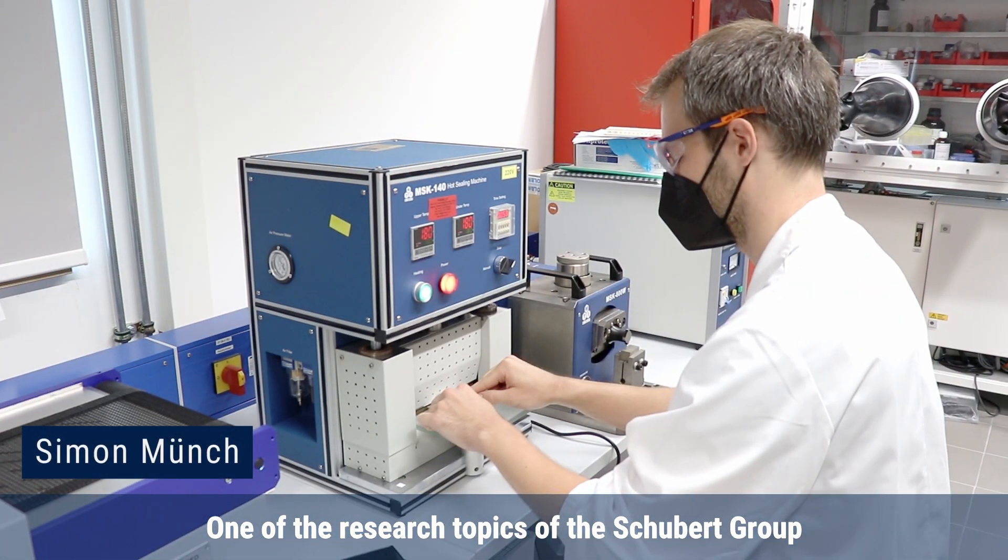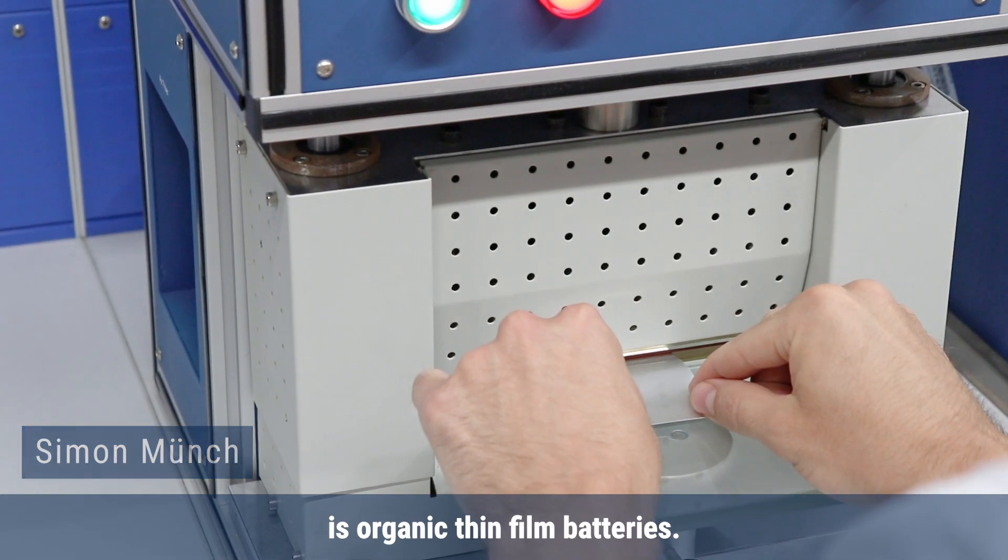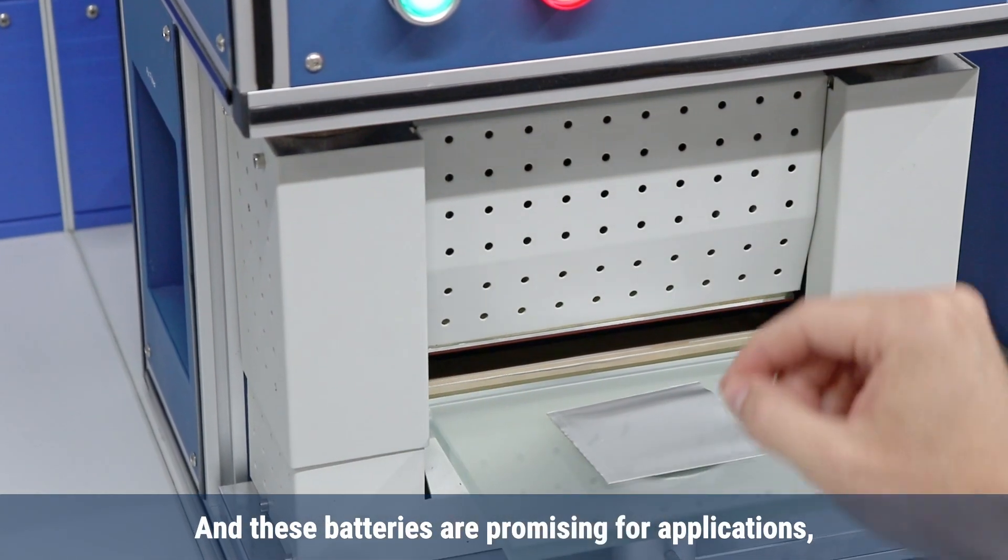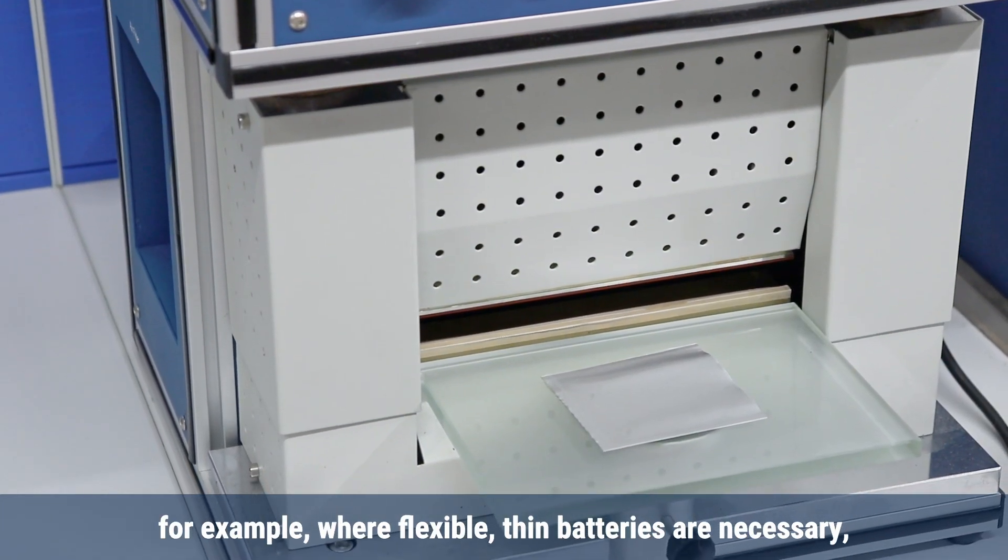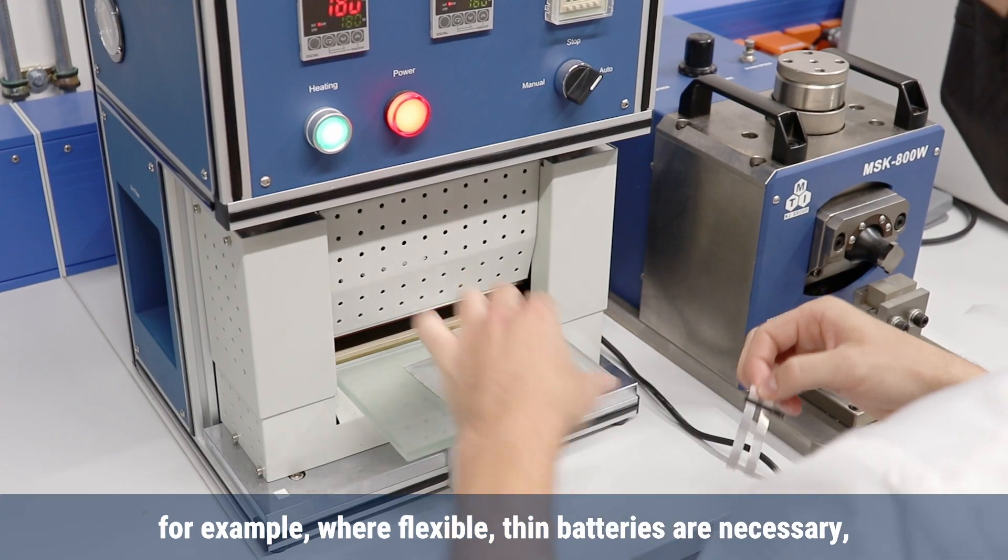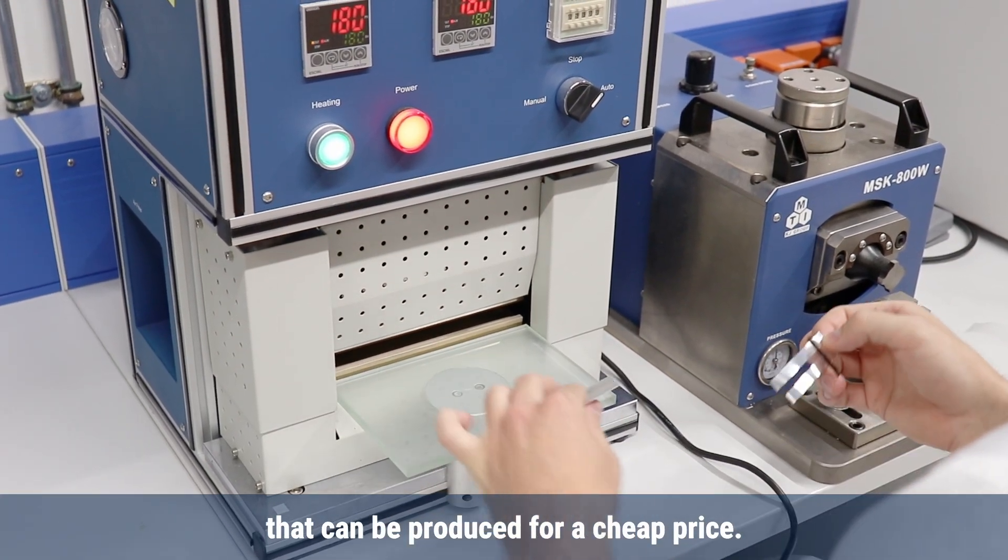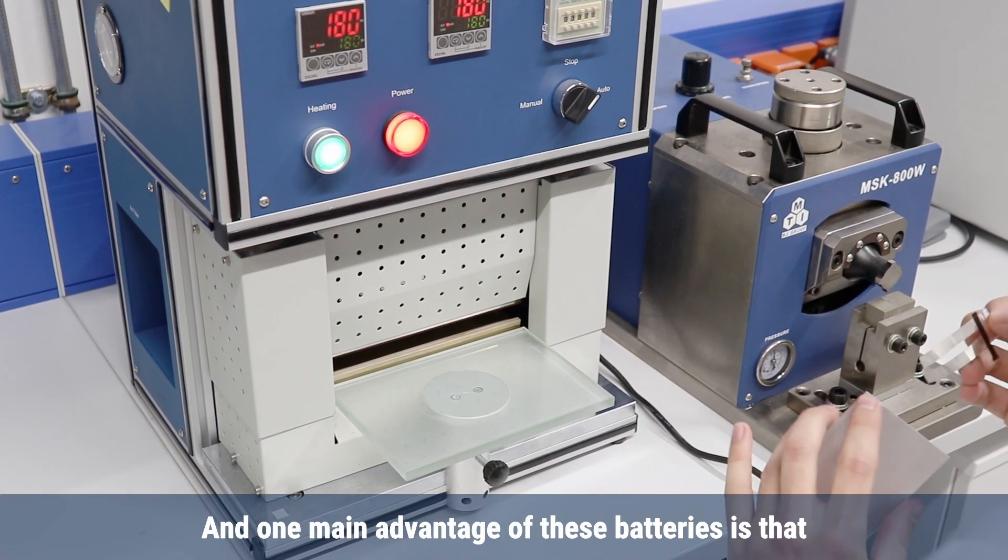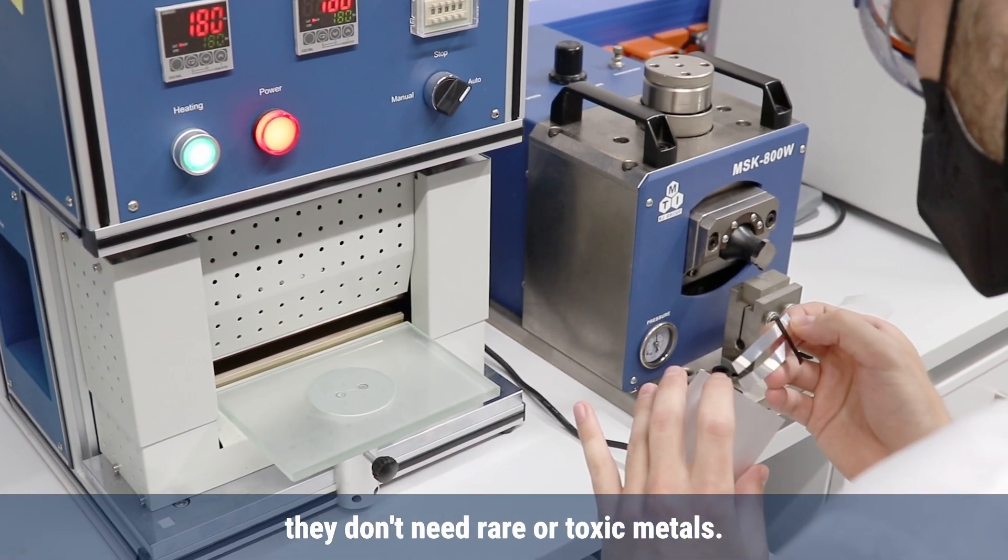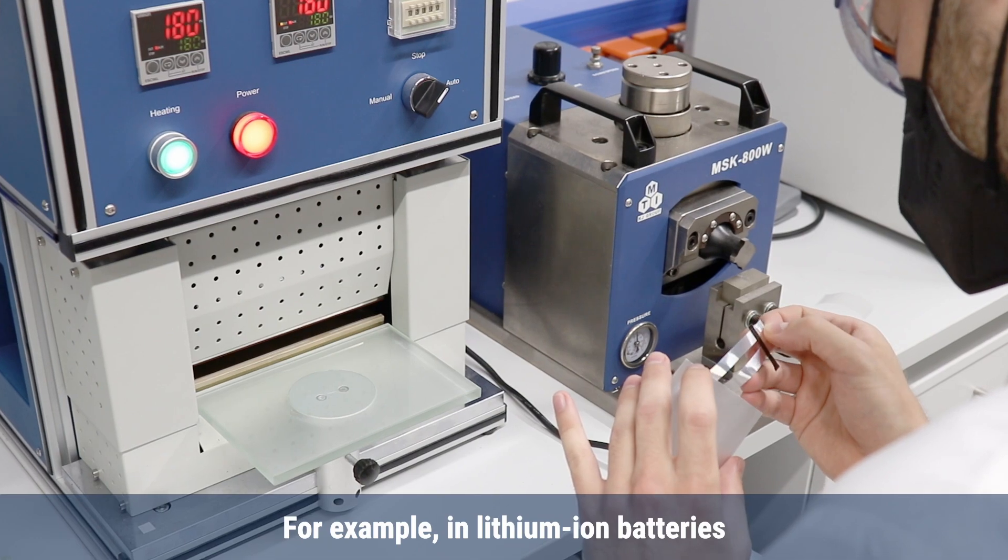One of the research topics of the Schubert Group is organic thin film batteries. These batteries are promising for applications where flexible, thin batteries are necessary that can be produced for a cheaper price. One main advantage of these batteries is that they don't need rare or toxic metals.